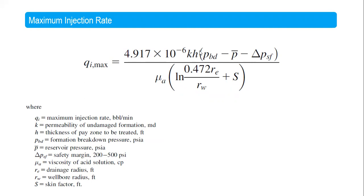You also need to know the breakdown pressure, the reservoir pressure, and delta P_sf — a safety margin you can set at a value of 200 to 500 psi. Additionally, you need the viscosity of the acid, r_e (the drainage radius of your reservoir), r_w (the wellbore radius), and the skin. With all this information, you can easily calculate your maximum injection rate, and the actual injection rate can be determined by applying a safe margin below this maximum.